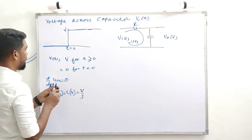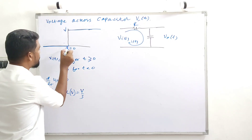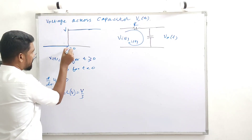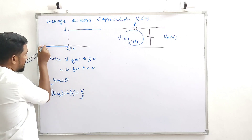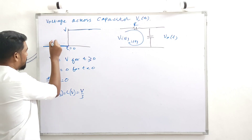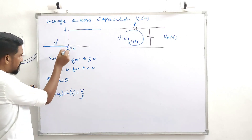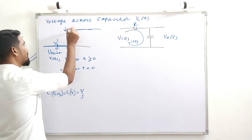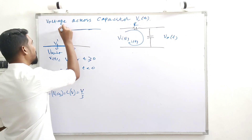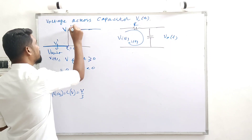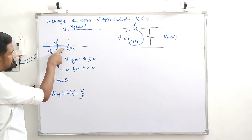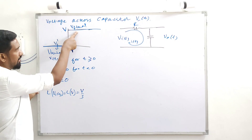A very important point to be noted over here: at T equal to 0, it's going to be equal to 0. All of a sudden there is a transition — it's V dash, some notation. Initial voltage — V initial. This will be treated as V final.